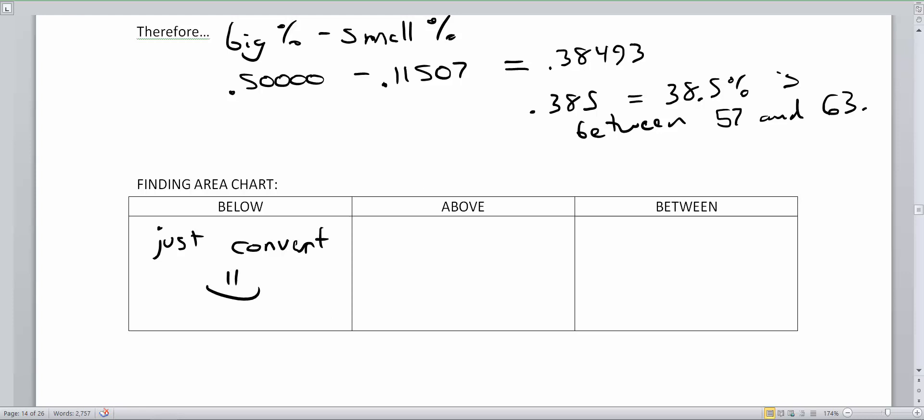Now, if you are asked for above, you're going to do the conversion, but make sure to subtract the conversion from the table by 1. Subtract that percent conversion by 1. The last step here, if it's a problem that asks you to go between two numbers, be sure to subtract the big percentage and the small percentage. Big percentage minus small percentage. Never subtract the z-scores. Convert the z-scores, then subtract the big percentage minus the small percentage.